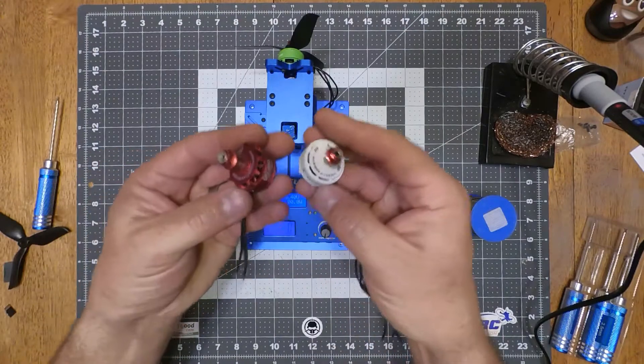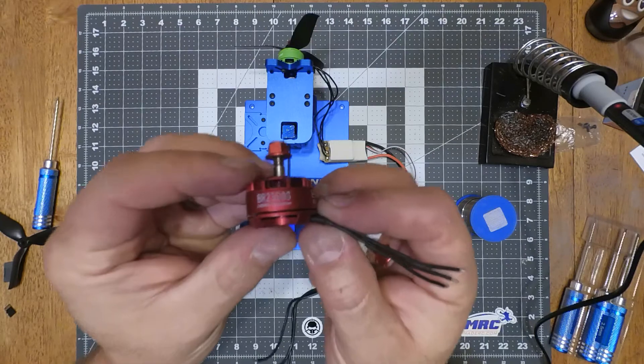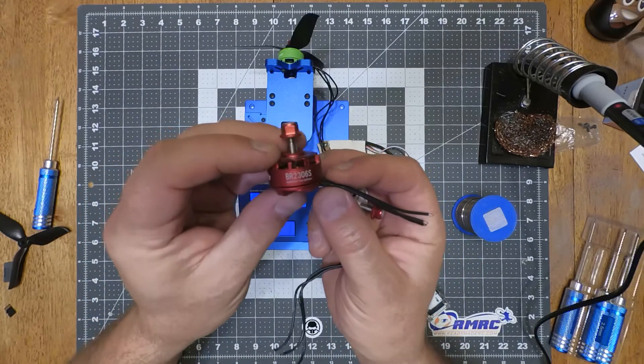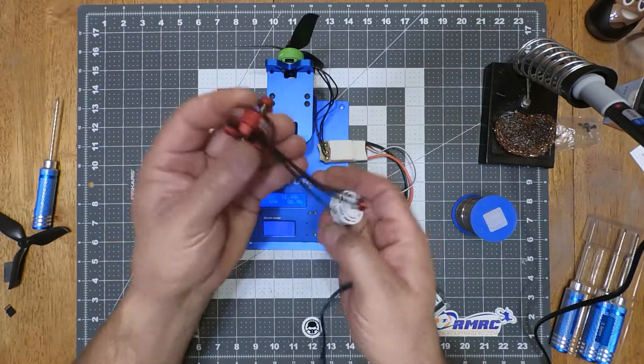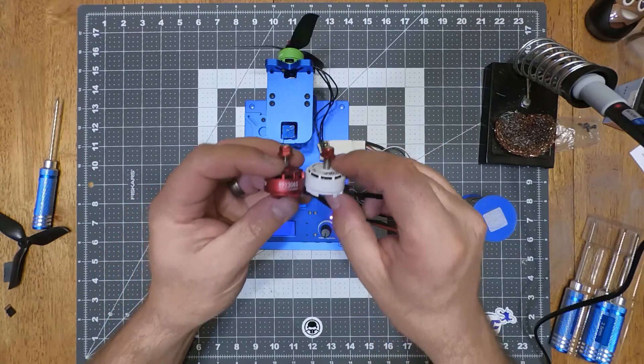The biggest thing is, I wanted to compare these to these. The Racer Star, it's not a real true good comparison because these are 2400 KV and these are 2650. But they're both 2306.